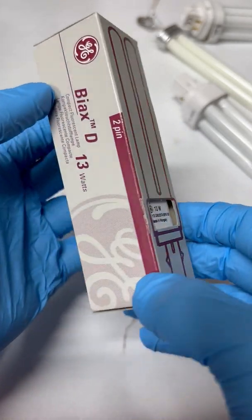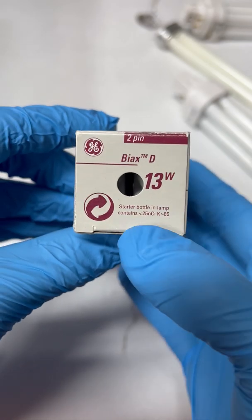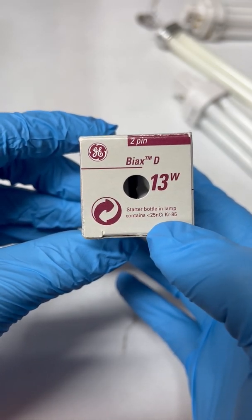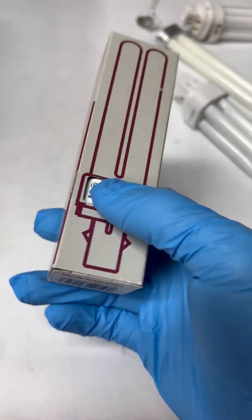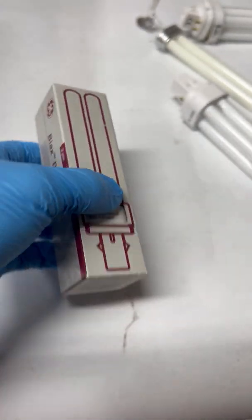Here I have an interesting radioactive light bulb. This light bulb contains 25 nanocuries of a radioactive gas known as krypton-85. Krypton-85 isn't the only radioactive gas used in these light bulbs. Sometimes tritium-3 is used as well.